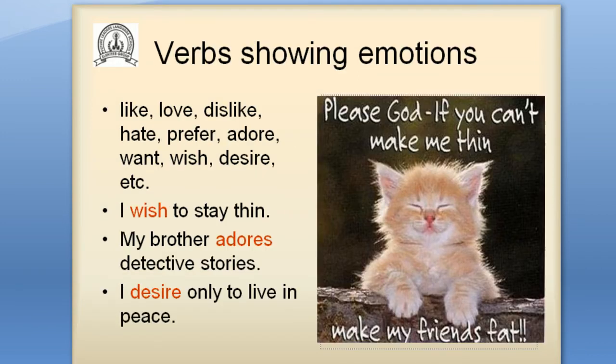They are divided into five types. Type 1: verbs showing emotions, like love, dislike, hate, prefer, adore, want, wish, desire, etc. For example: I wish to stay thin. My brother adores detective stories. I desire only to live in peace.